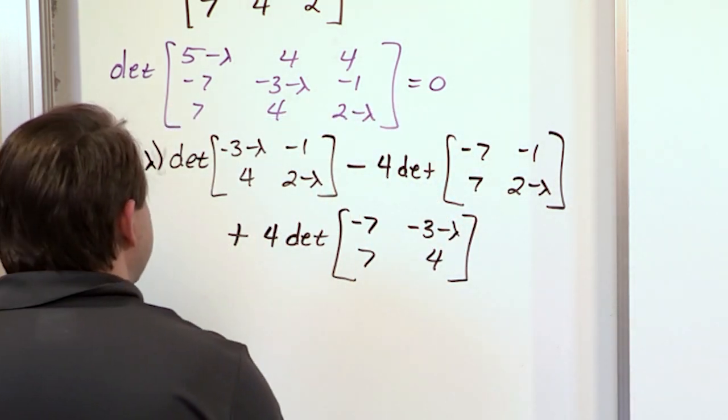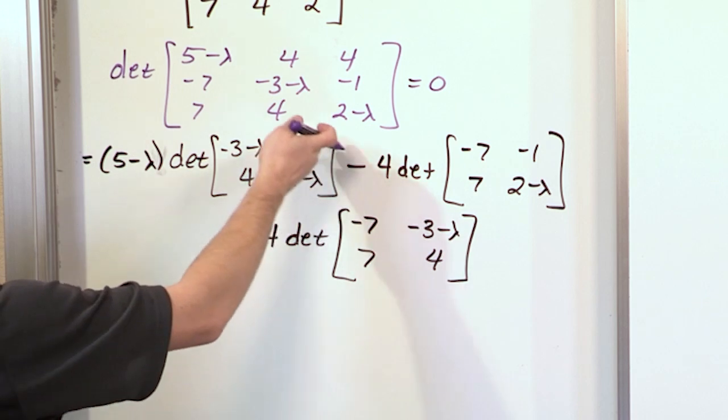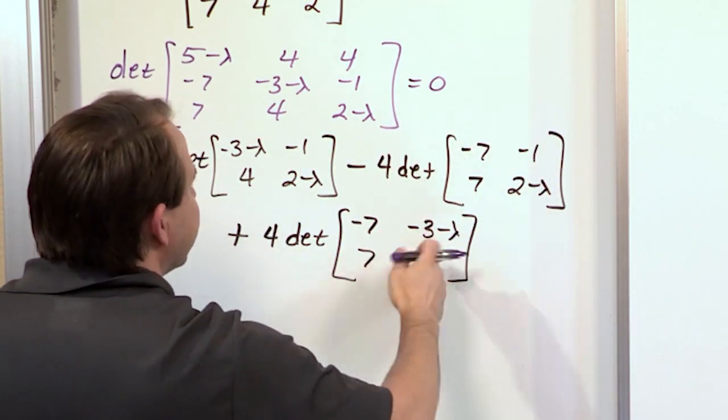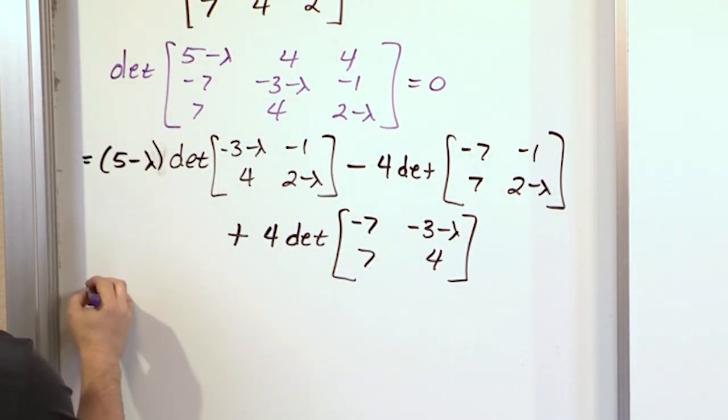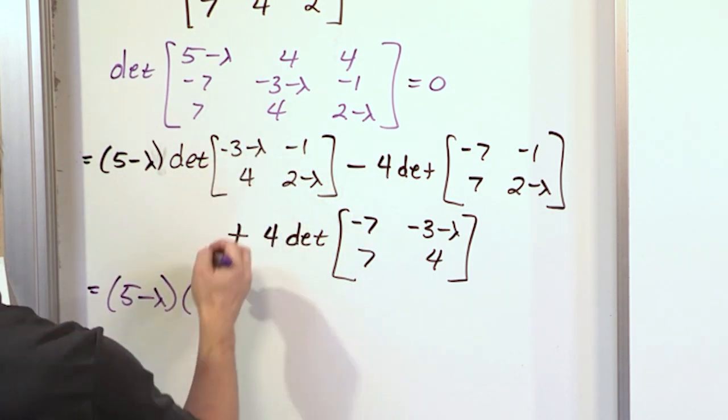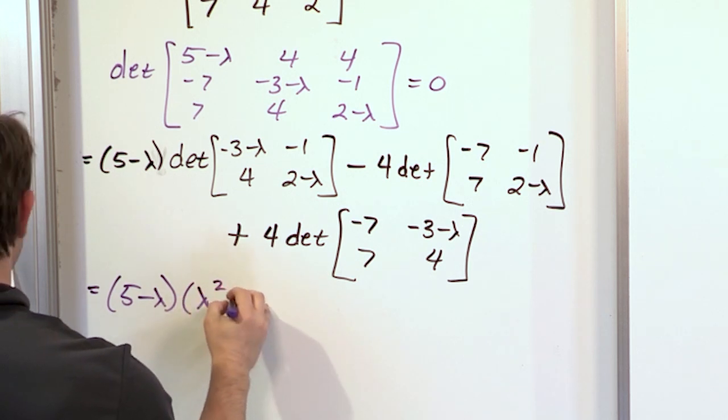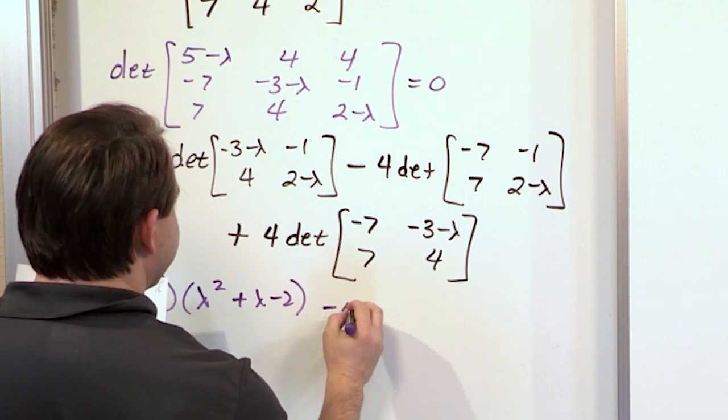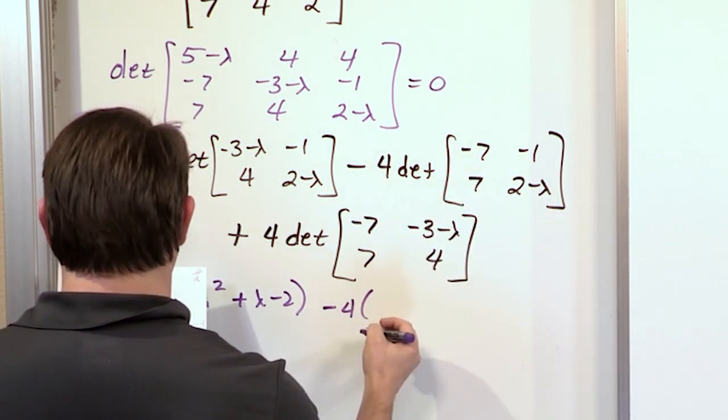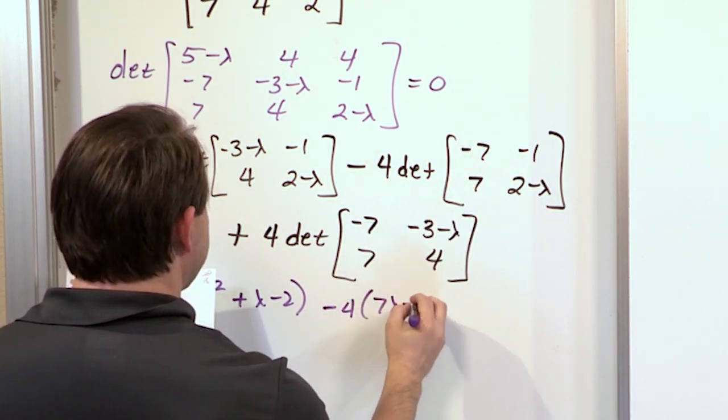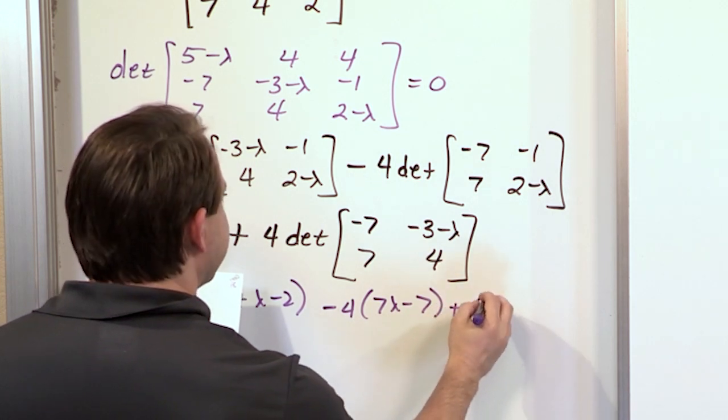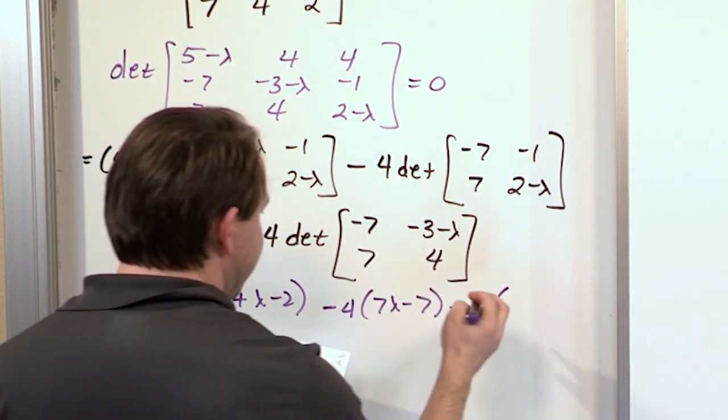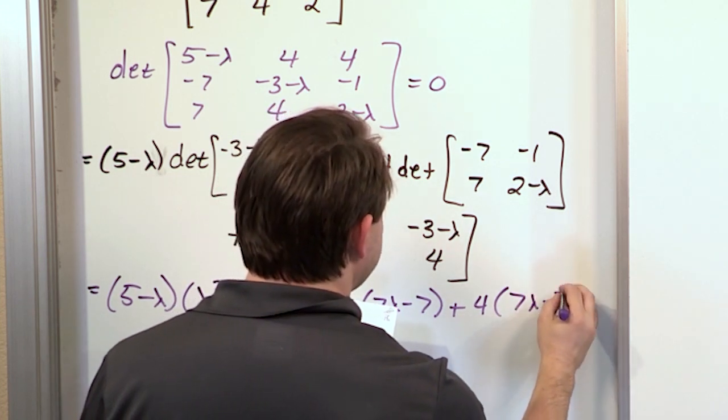If you were to do this crisscross, what you would have is 5 minus lambda times this polynomial lambda squared plus lambda minus 2. And then you're going to have minus 4 times 7 lambda minus 7. And this guy that pops up is 7 lambda minus 7.